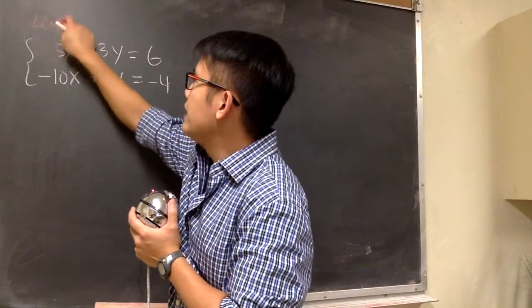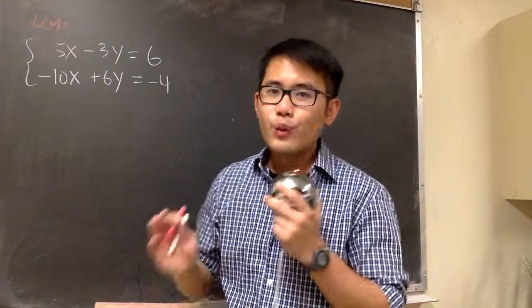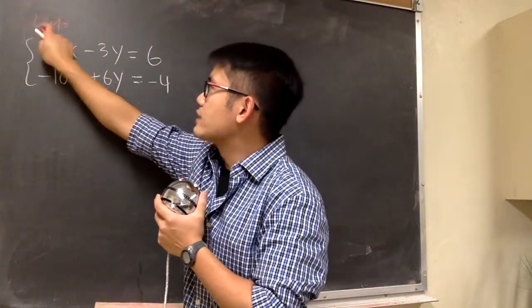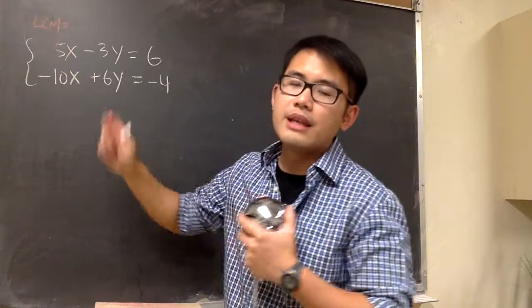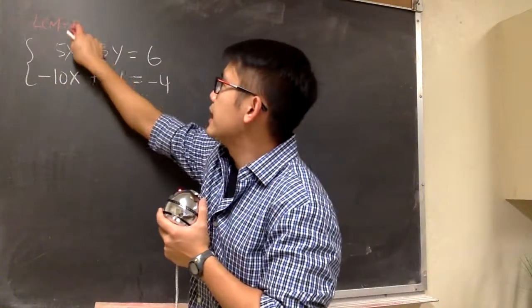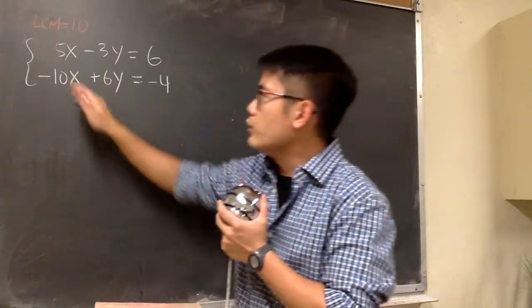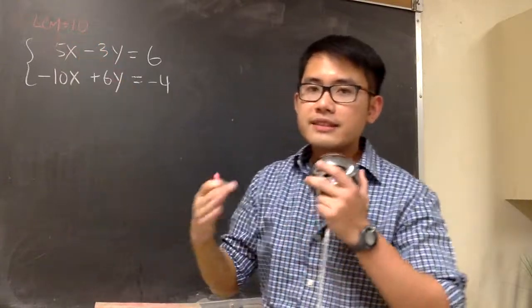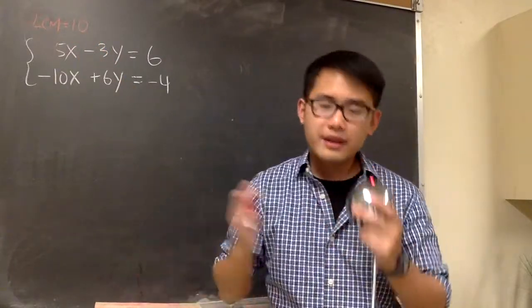Let me put down LCM above the x. And we have to figure out what is the LCM, the lowest common multiple of the number 5 and the number 10. And the answer to that is 10. This will tell us we want to make both of these numbers become 10, and the sign has to be alternating. One should be positive, the other one should be negative.